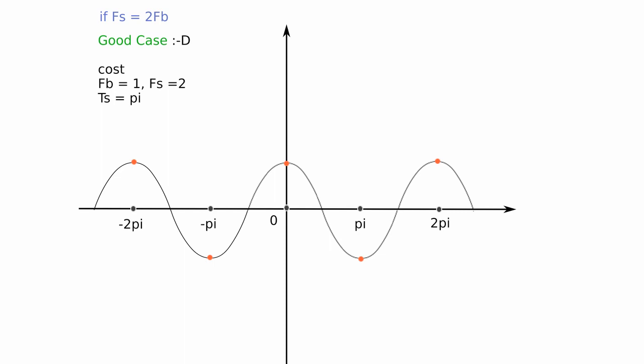Here we have a cosine wave sampled at twice its frequency, with the sample points colored red. In this case, we can successfully recover the original signal by interpolating between the samples.